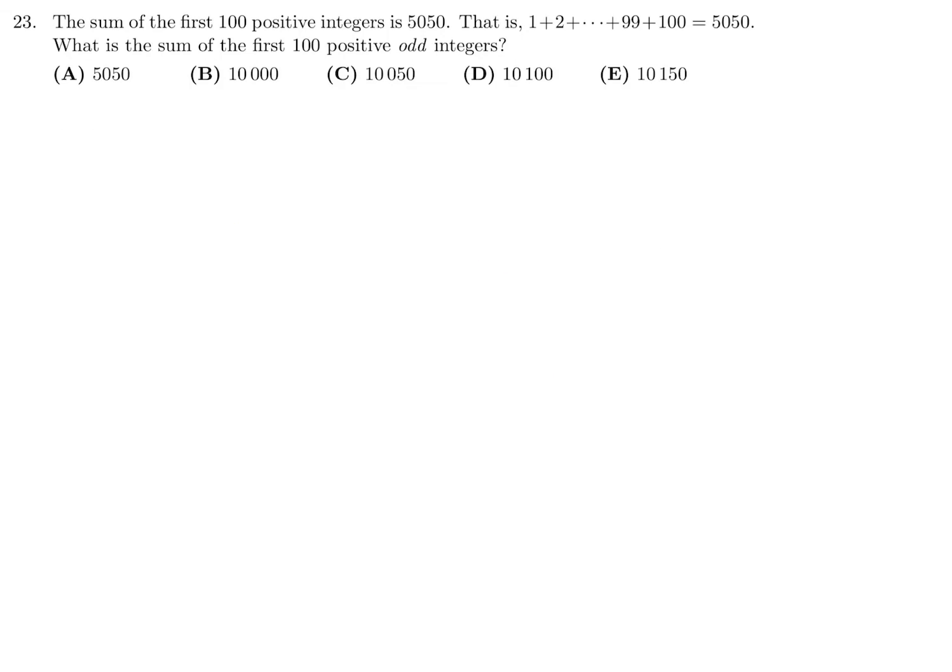The sum of the first 100 positive integers is 5050. That is 1 plus 2 plus 3 all the way up until 100. What is the sum of the first 100 positive odd integers?